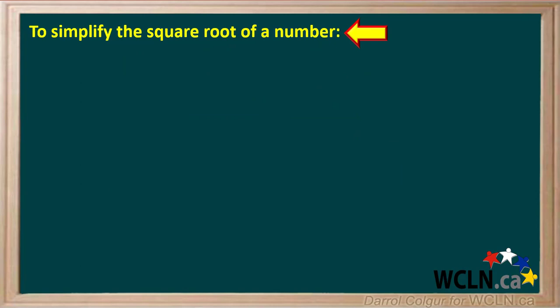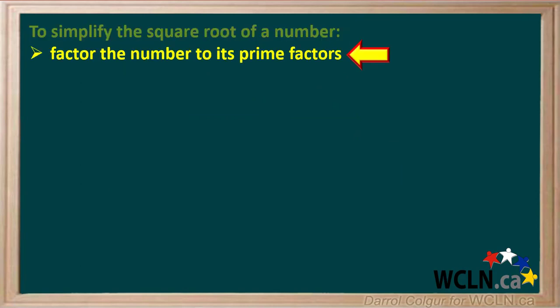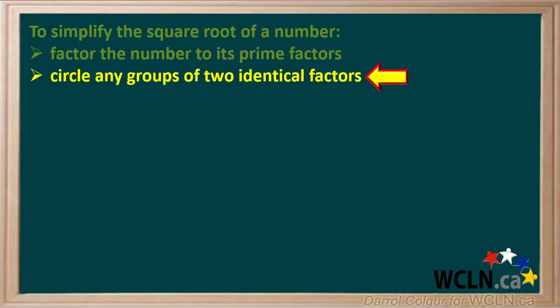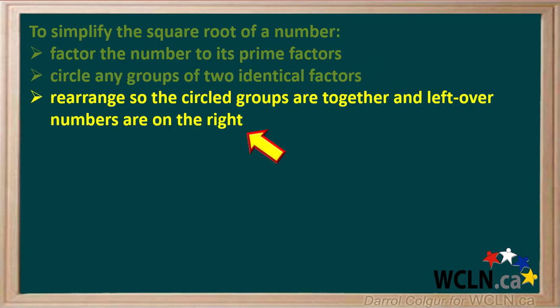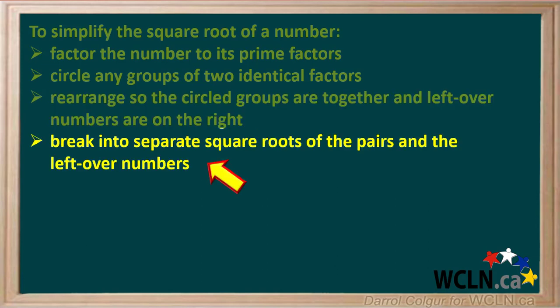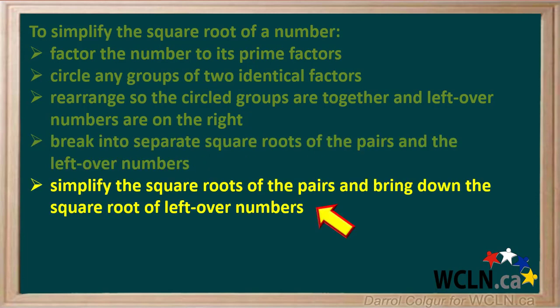We'll summarize the steps used to simplify the square root of a number using prime factors. First, factor the number down to its prime factors. Then look for any group of two identical factors and circle any you find. Next, rearrange the numbers so circled groups are together and any leftover numbers are on the right. Then break the single square root into separate square roots of each pair and the leftover numbers.